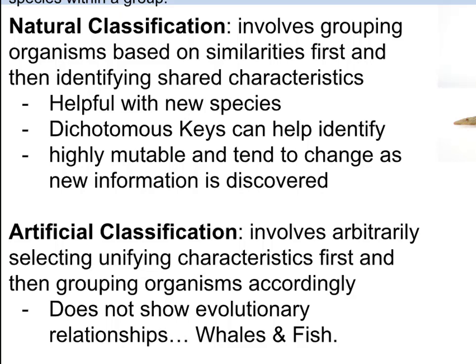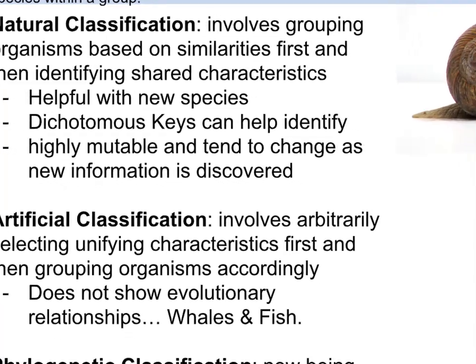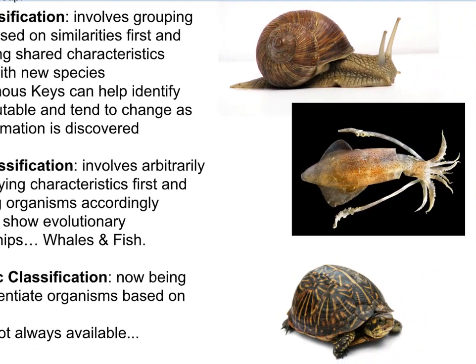With artificial classification, this involves arbitrarily selecting unifying characteristics first, and then grouping organisms accordingly. The advantage is that such schemes are easy to develop and relatively stable, and they're unlikely to change. The disadvantage is they do not generally show evolutionary relationships, and for this reason they're not commonly used — and by not commonly, I really mean not at all.